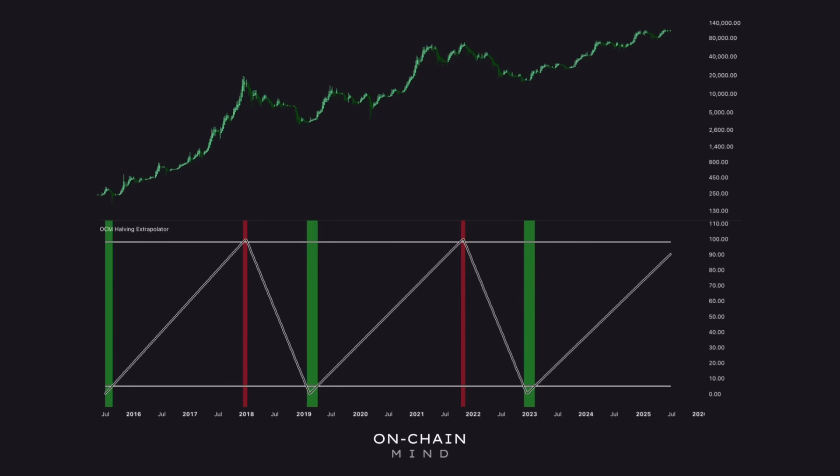First up, I've got an indicator I call the halving extrapolator. This measures how far along we are between Bitcoin halving events by calculating the exact fraction of time passed within each cycle. Instead of focusing on price, it zeros in on these key timestamps and converts the current time into a percentage that shows our position within the cycle. If we extend this indicator out based on the halving cycles, we're due to see a peak around October of this year, which really isn't that far away.